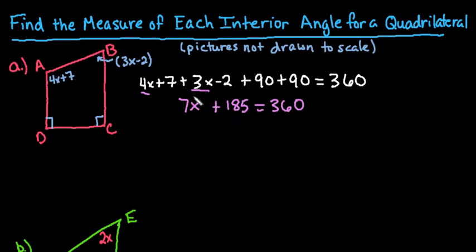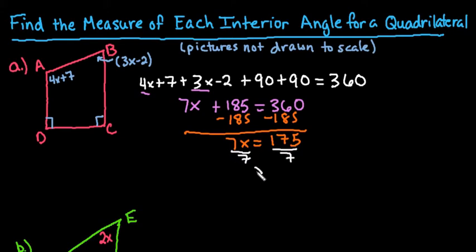So our next step would be to get the 185 to the other side, so the opposite of adding is subtracting, and we would end up with 7x is equal to 175 degrees. And then our final step in solving for x is to divide by 7, and we would say that x is equal to 25 degrees.